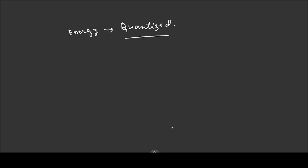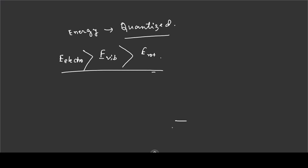The electronic energy gap is large, but the vibrational level is quantized and the rotational energy level is quantized. The electronic level is quantized, the vibrational level is quantized — the energy levels in spectroscopy are quantized.